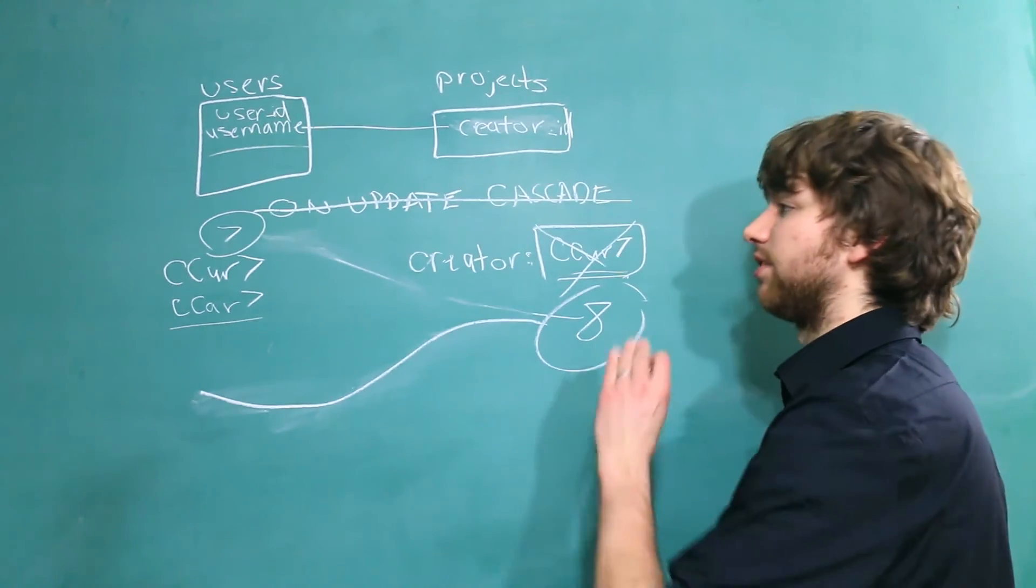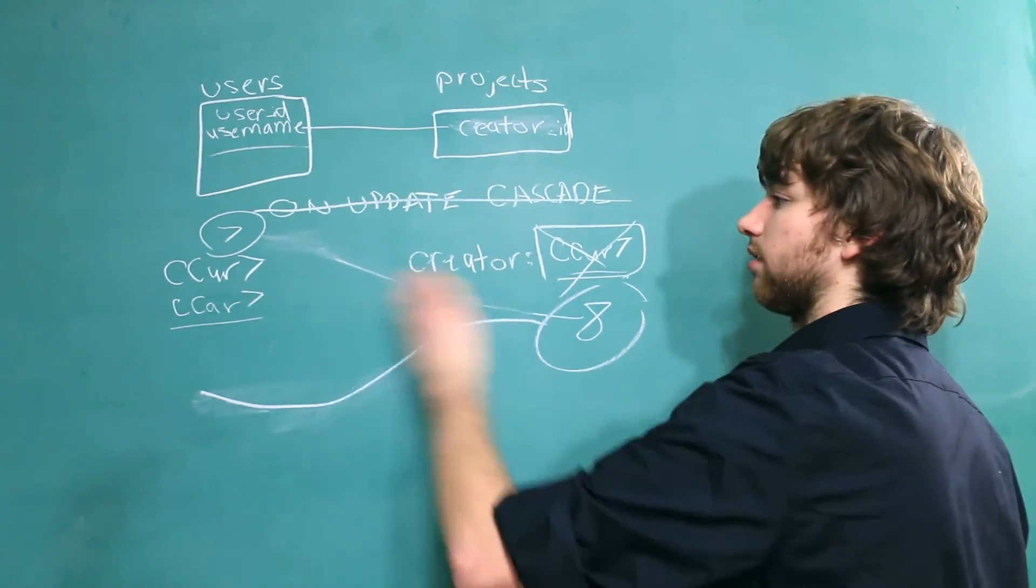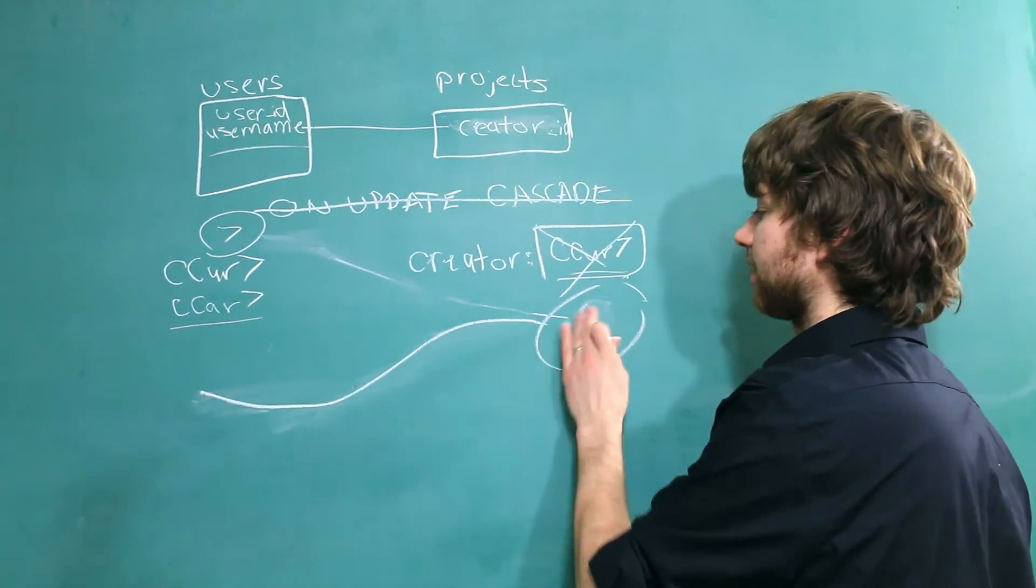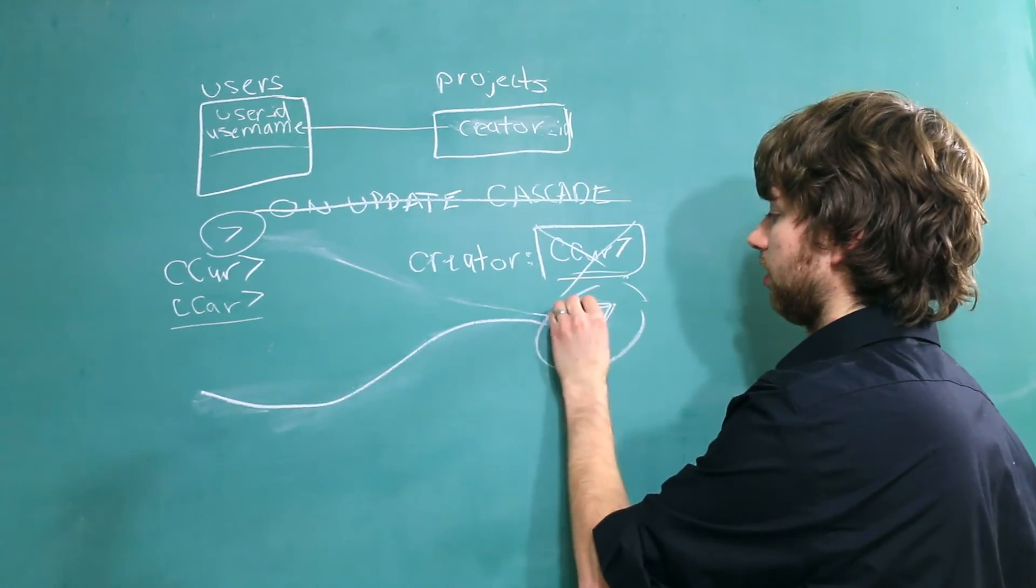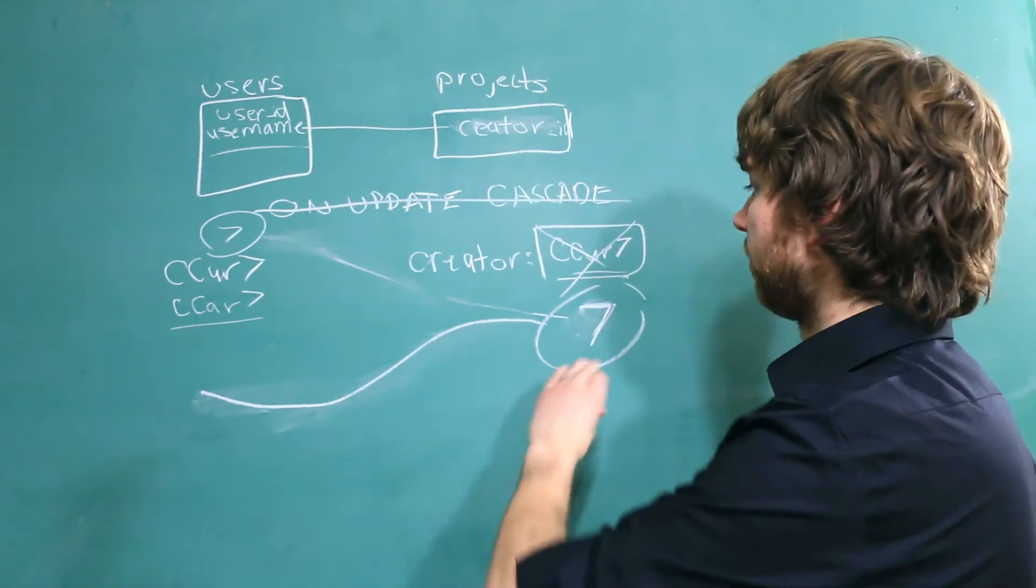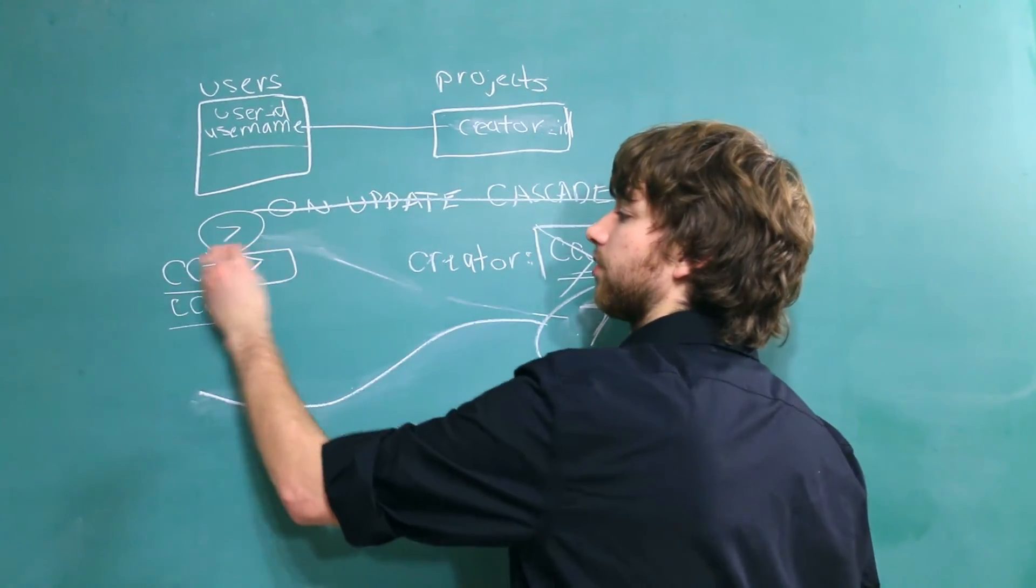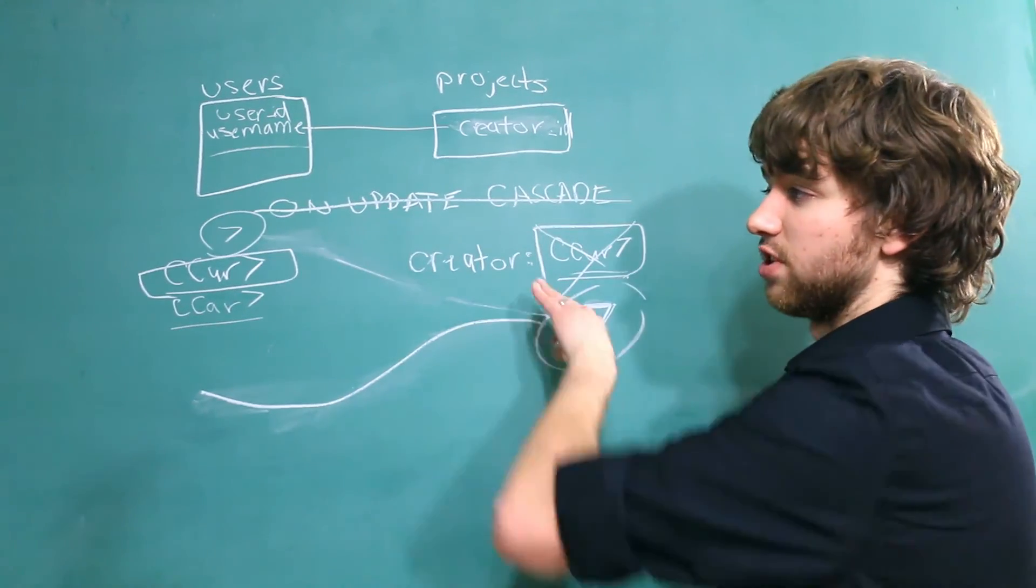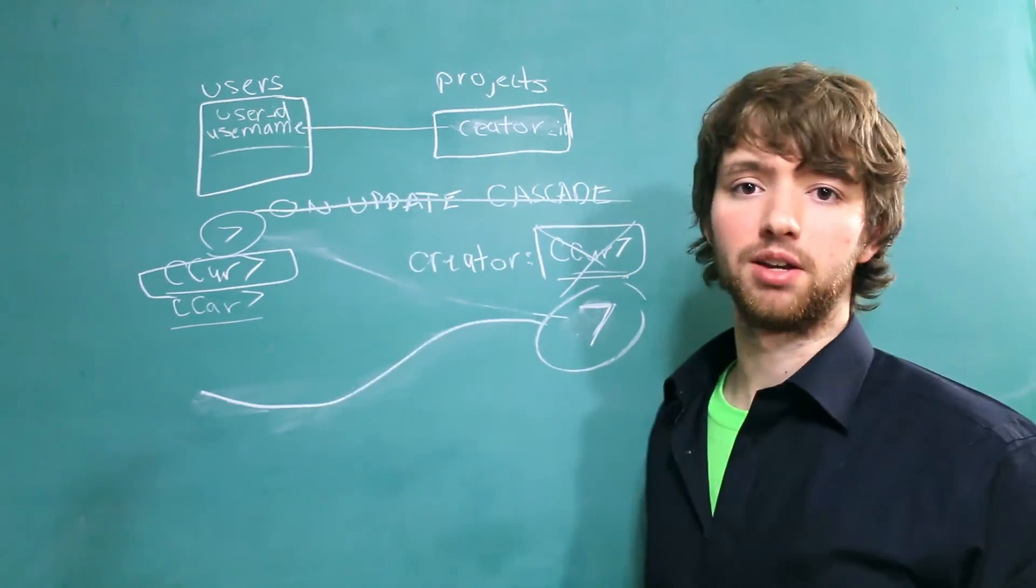But if it's talking about one person or one entity, then it should never change. So let's go back to 7, for example. In this situation, as long as we're talking about this person, this should never change. The only time this should change is if we change the entity we're talking about.